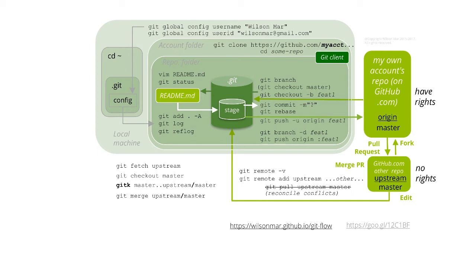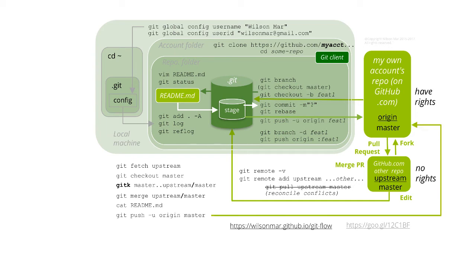Notice the slash operator. Then use the cat or less command to verify file contents. Lastly, we git push to update origin master on our forked repository. Thank you.